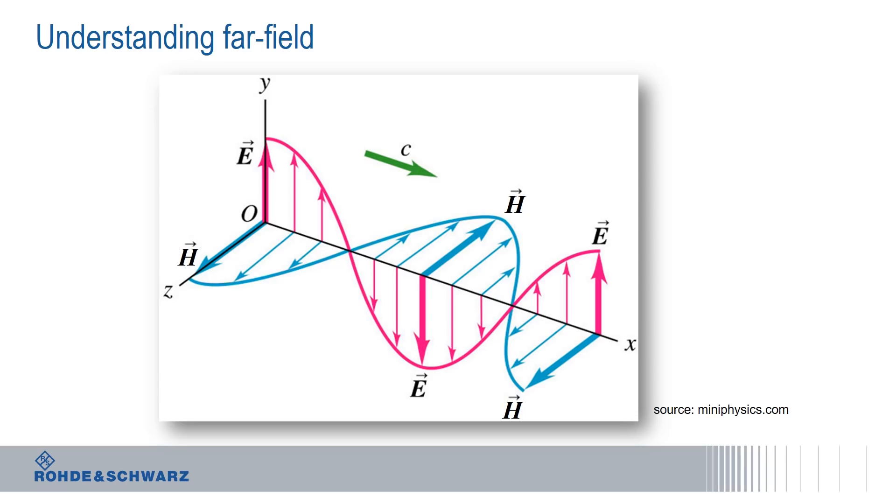We're talking about far field when the following conditions are met: the electromagnetic field, defined by the E and H field vectors, are orthogonal to each other and connected through the free space wave impedance of 377 ohms. E and H field vectors are transverse to the direction of propagation. And equally important, the angular distribution is independent from the distance to the antenna. The next question is then of course where the far field starts.